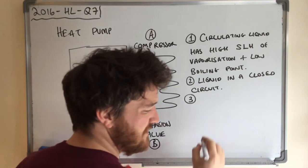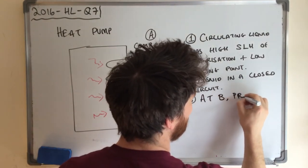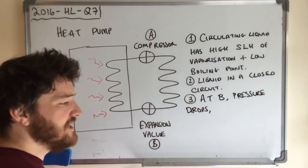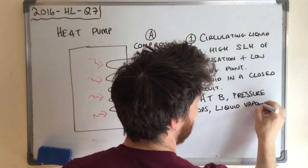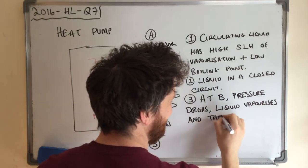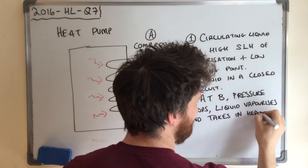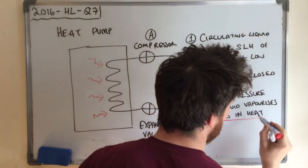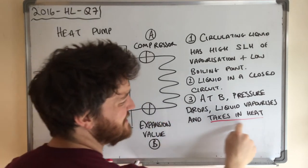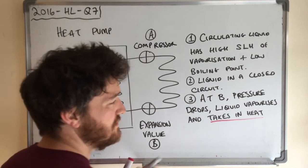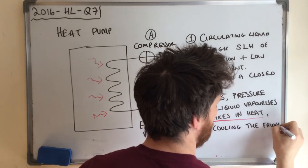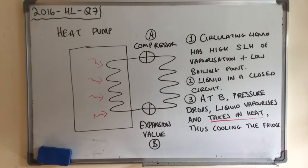At the expansion valve, pressure drops, the liquid vaporizes, and in order to do this it takes in heat from the fridge — that's the key part. It takes in heat, which means the fridge gets cooler, thus cooling the fridge. That's the core of how a heat pump reduces the temperature of a cold region.